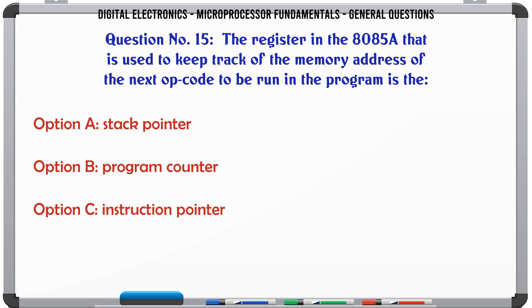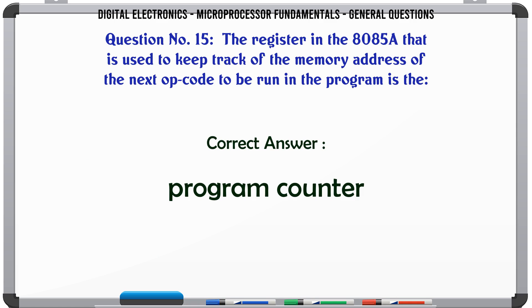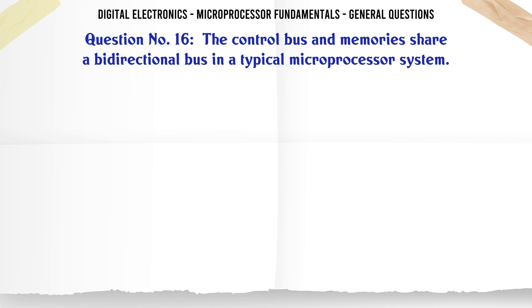The register in the 8085A that is used to keep track of the memory address of the next OP code to be run in the program is the: A. Stack pointer, B. Program counter, C. Instruction pointer, D. Accumulator. The correct answer is Program counter.